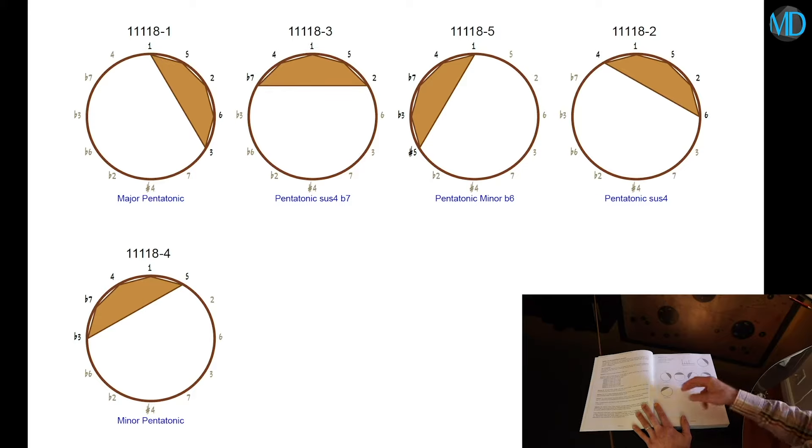In this page, you have a source scale and its related modes graphed over the circle of fifths. This page, for example, shows a major pentatonic scale and all of its related modes. As you can see, there are 5 scales in this set, which means that this is a scale with 5 modes.